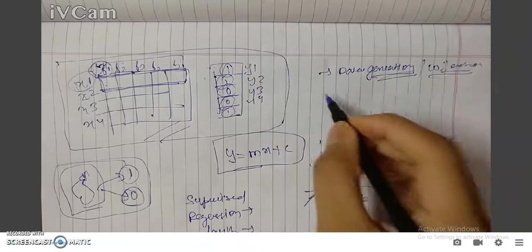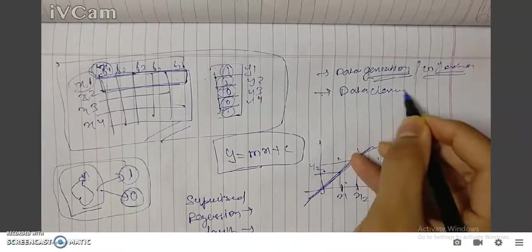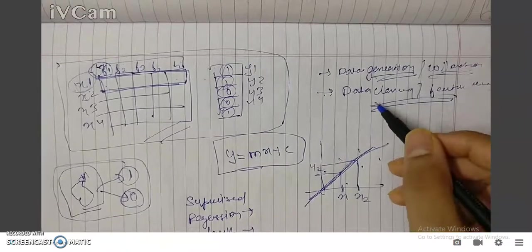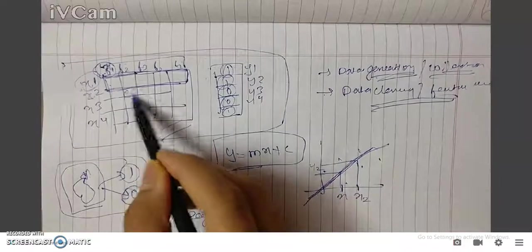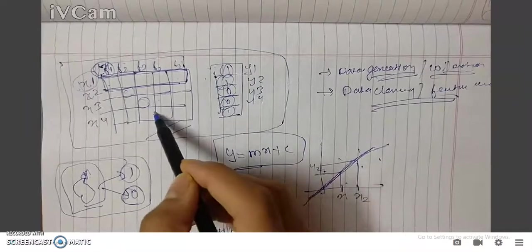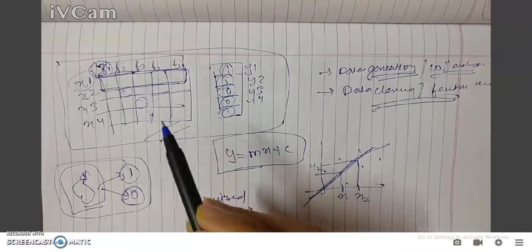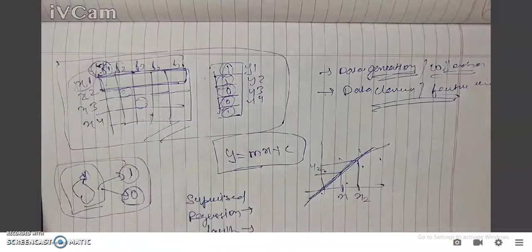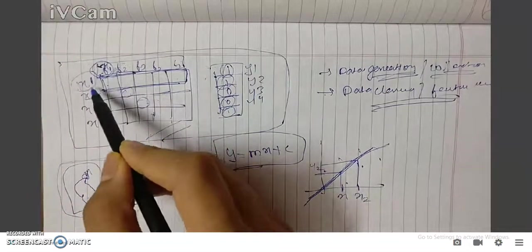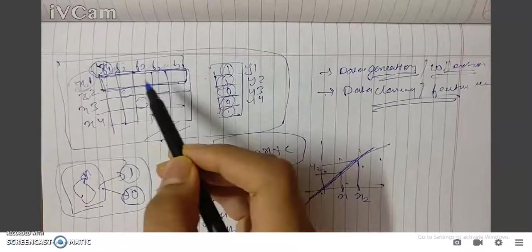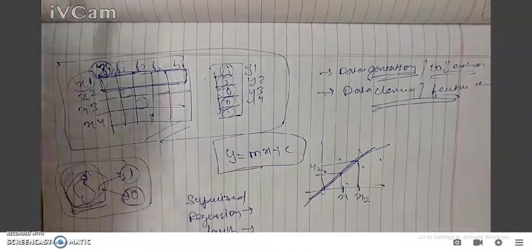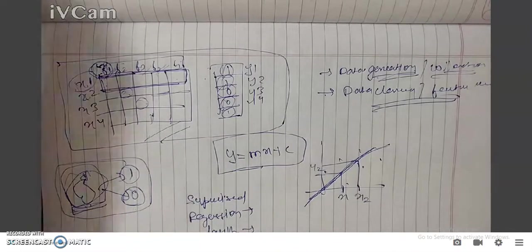The second step is data cleaning or feature engineering. In this particular part, we clean the data whether there are some null points inside the data, or we need to change the categorical data to numerical data. We're going to see all these things in future videos, but for now just understand the steps. In feature engineering, some features are not that important. Suppose the feature can be weather - weather is not a good feature to calculate whether it is apple or not, so we can remove that particular feature.